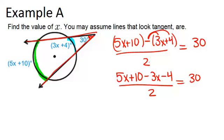Now I can combine like terms on the top part of the fraction and I get 2x plus 6 divided by 2 equals 30.